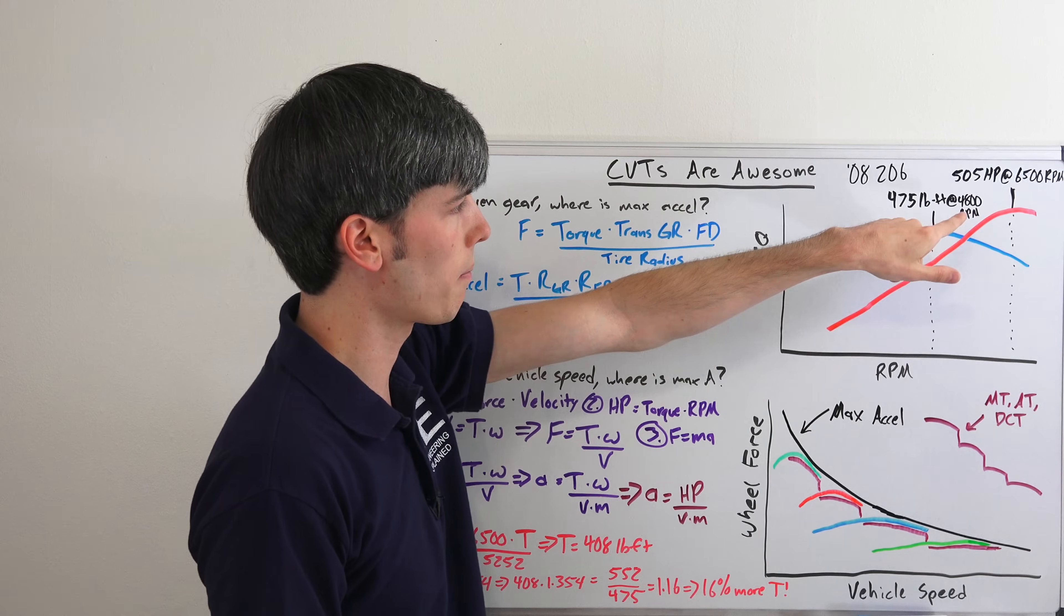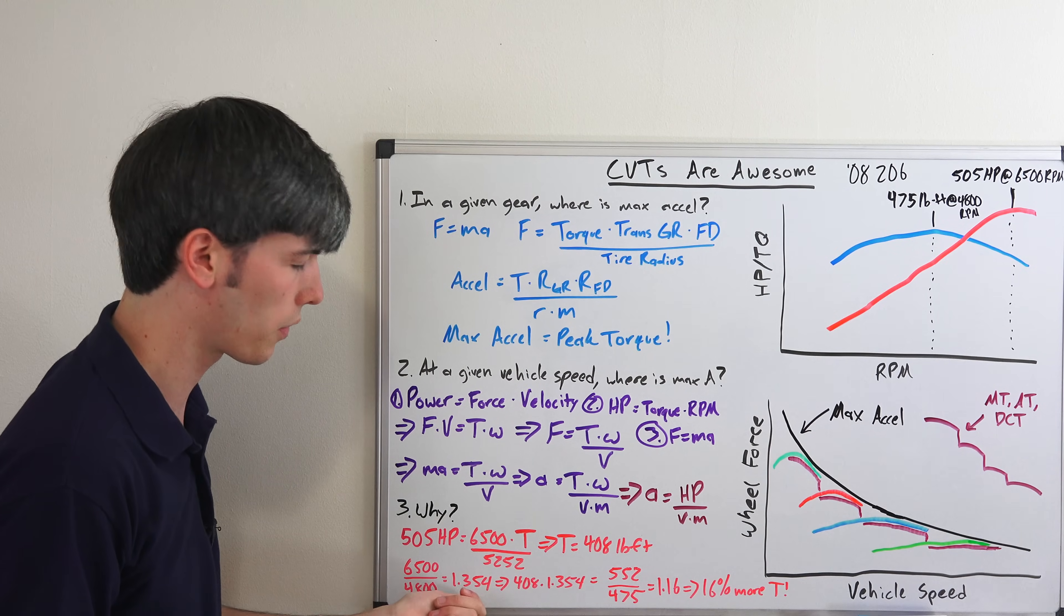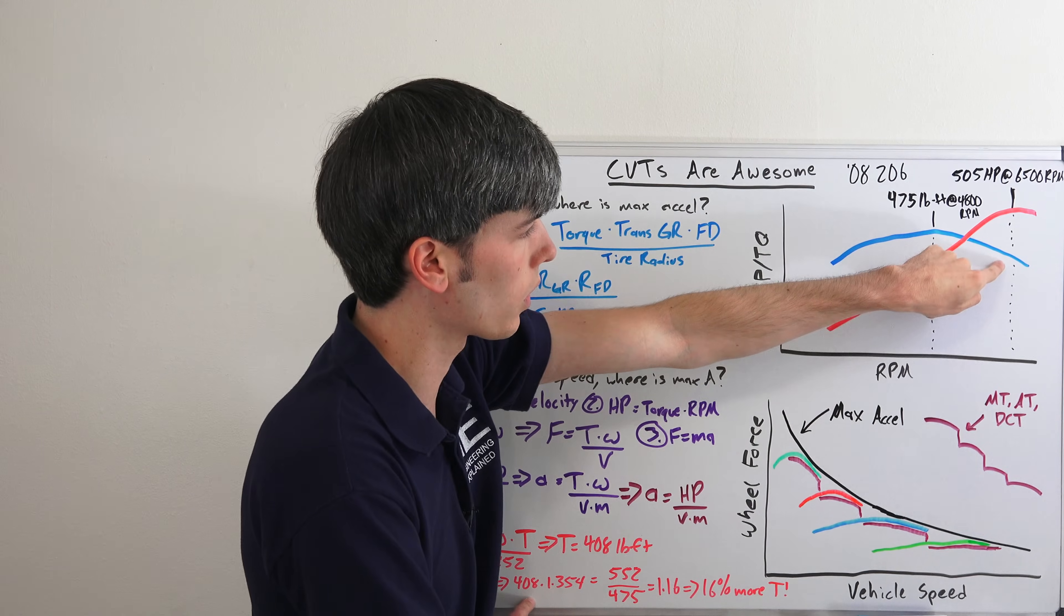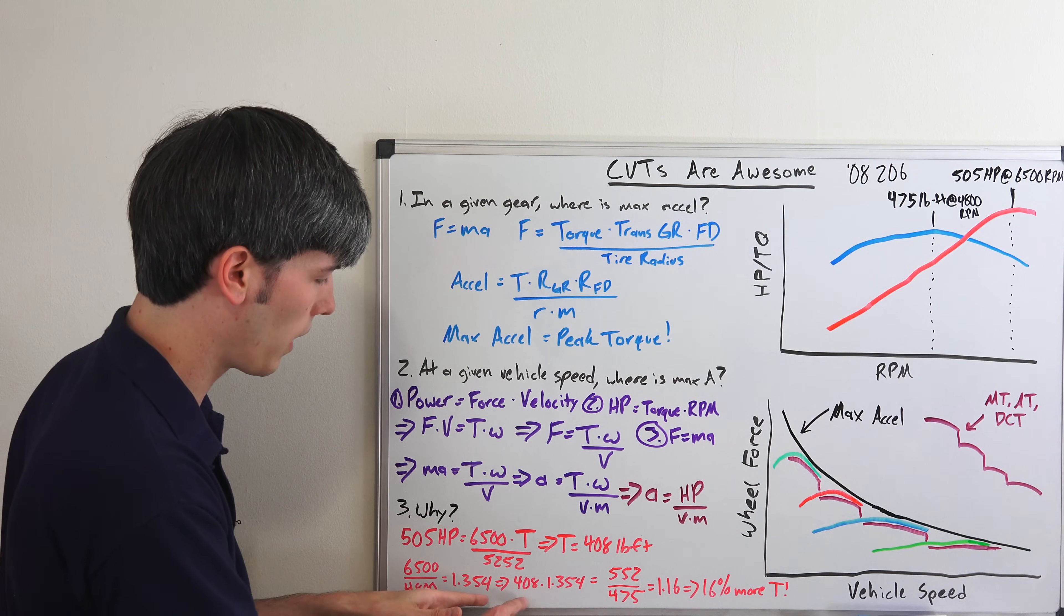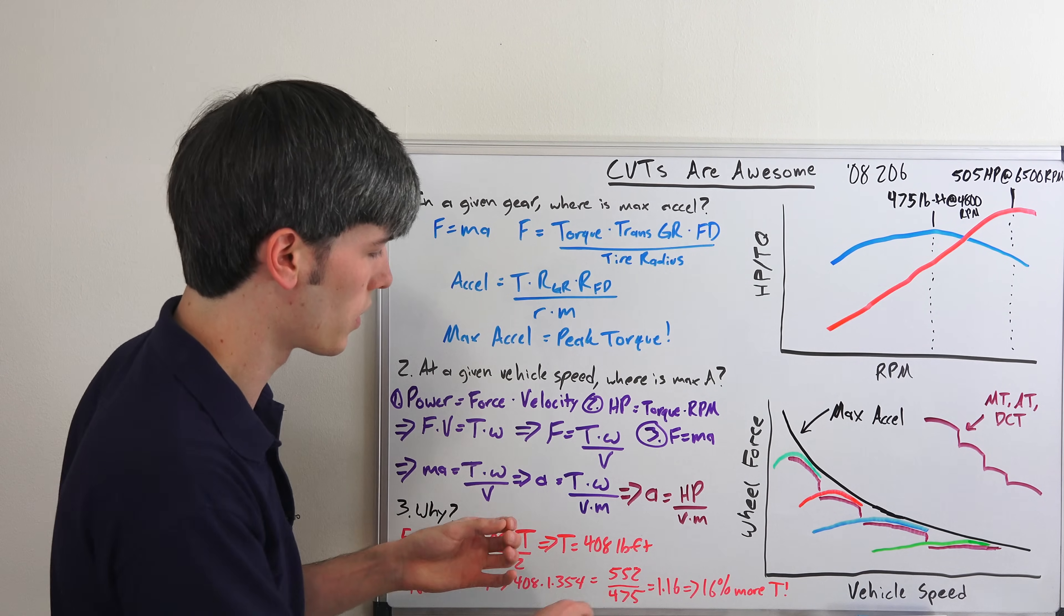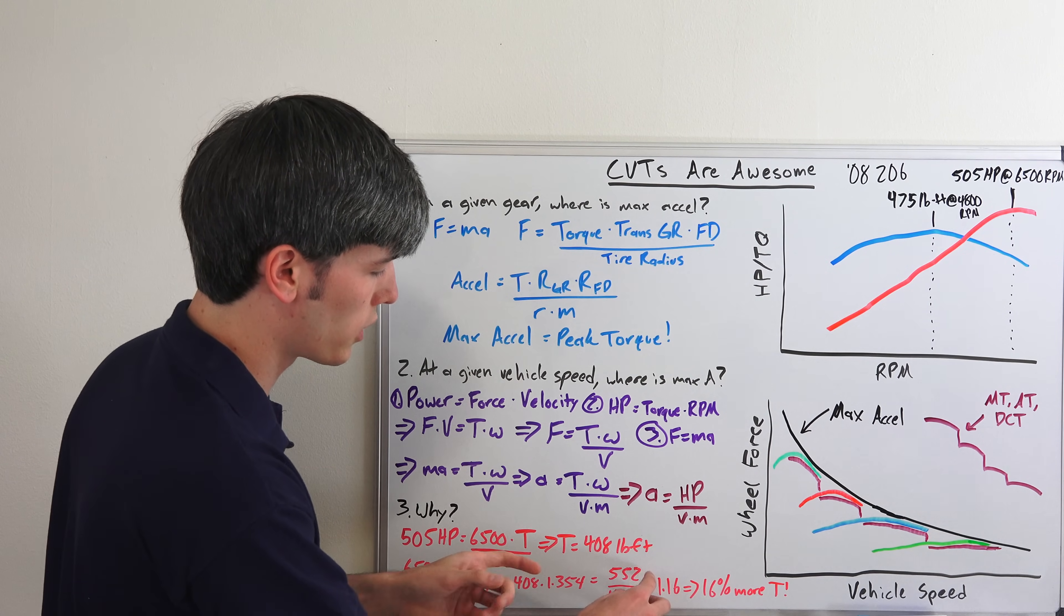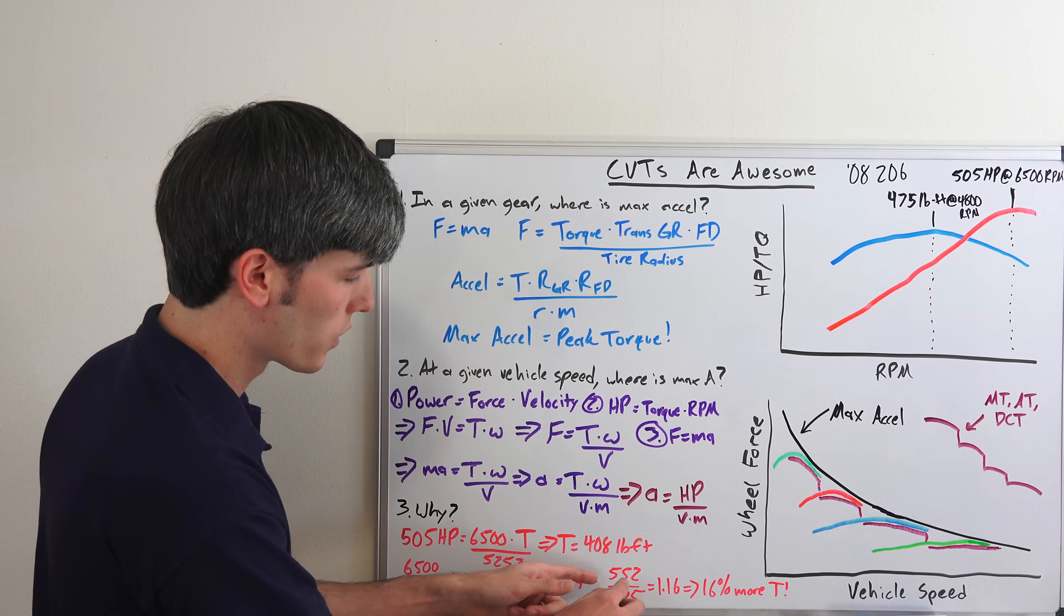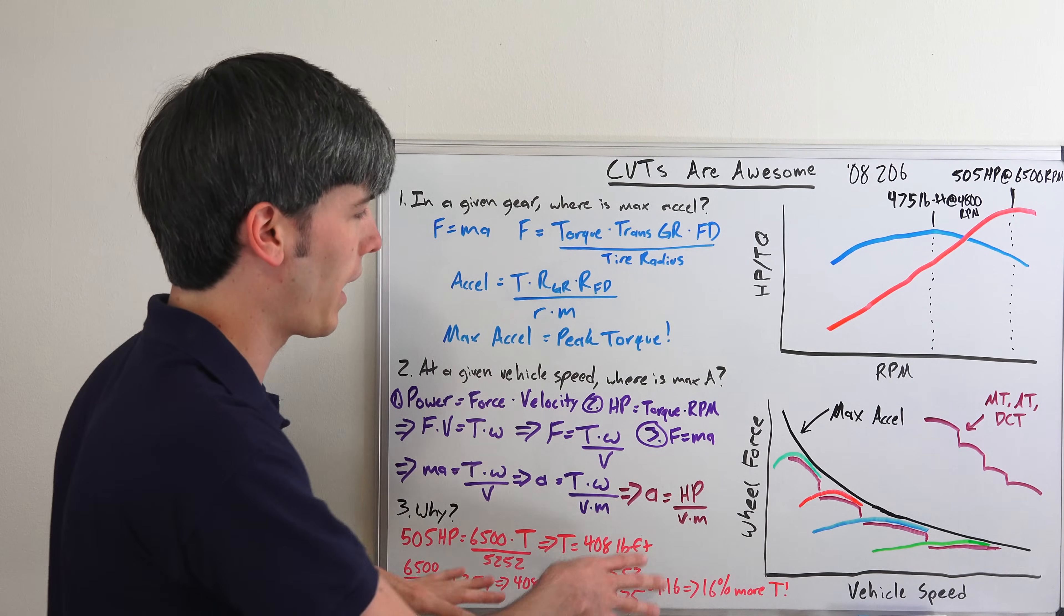Well, if you divide 6500 by 4800, that would give you your gear ratio difference: 1.354, so a 35% more aggressive gear ratio. So we take 408 pound-feet of torque, which is what we produce right there, we multiply that by that gear ratio 1.354, that gives us 552 pound-feet which is going to be going to the wheels versus 475 from the engine. So this is assuming you go through the transmission - this would be a one-to-one, this would be a 1.354 to one ratio.